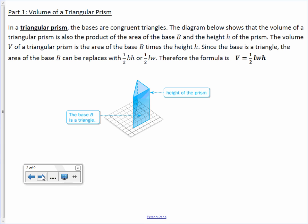Since the base is a triangle, the area of the base, B, can be replaced with one-half base times height, or one-half length times width. Therefore, the formula is: Volume equals one-half length times width times height.